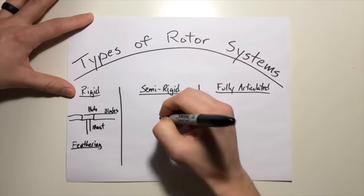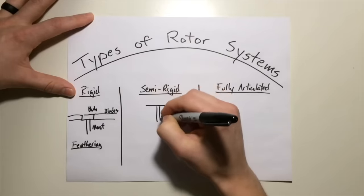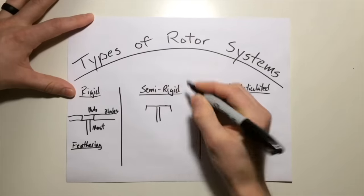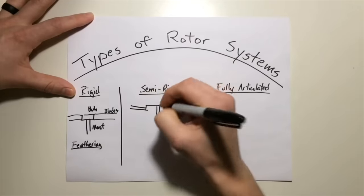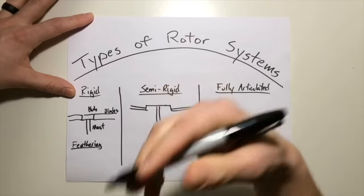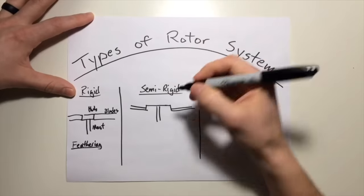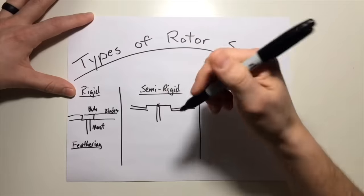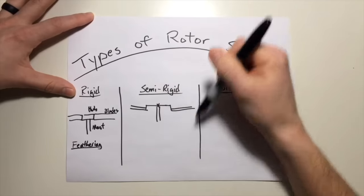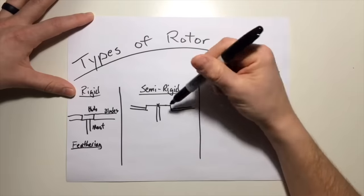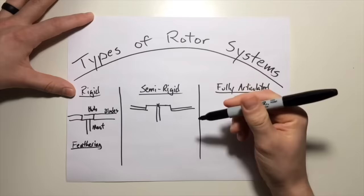Now this system incorporated a way for the system to pivot. So here we had the mast and then the blades attaching to the hub. So now this system also known as a teetering or a seesaw system incorporated a horizontal or a flapping hinge. So the blades no longer absorbed the loads of flapping and therefore weren't as prone to failure. So this rotor system could flap and feather to compensate for dissymmetry of lift.